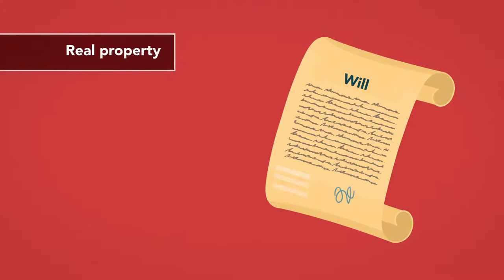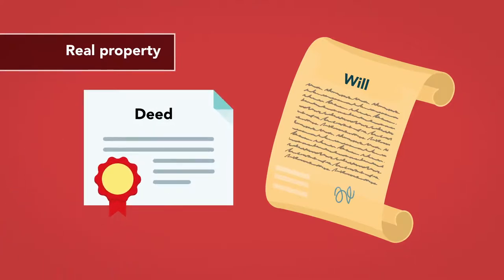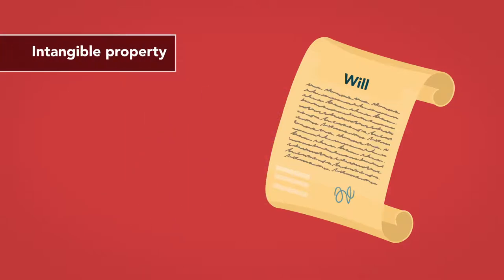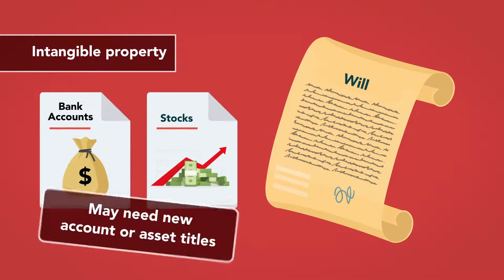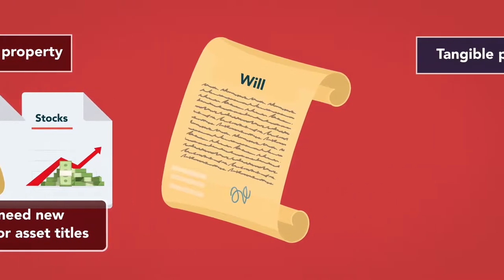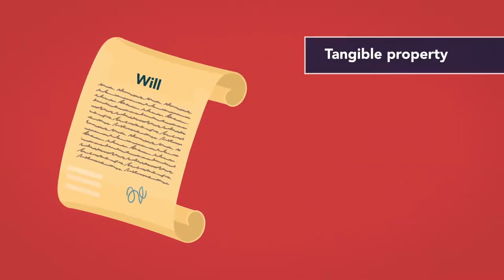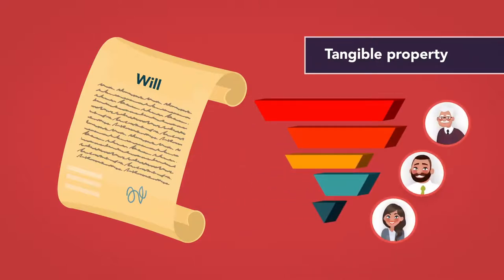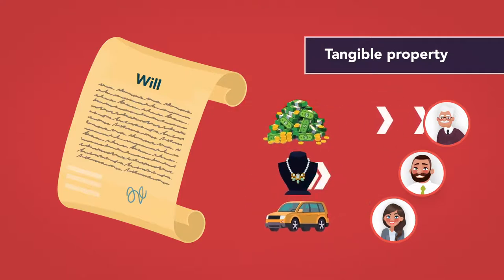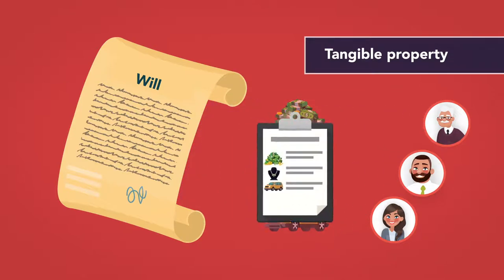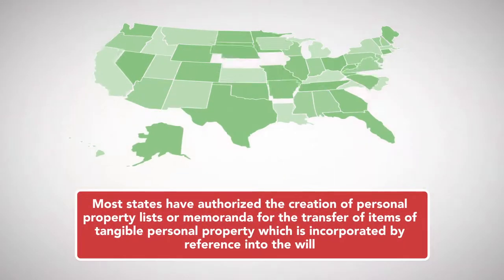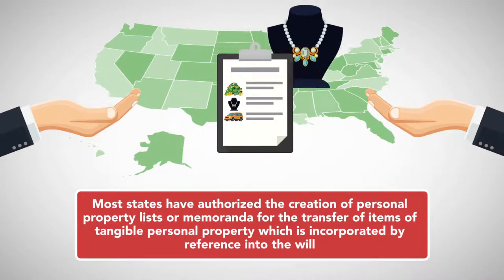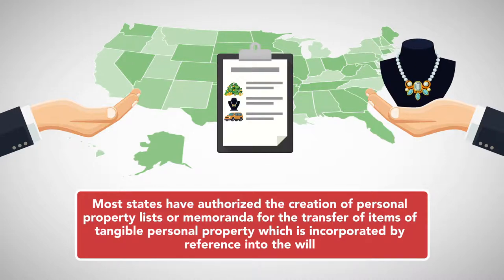Real property disposed of by will may also require a new deed or other documentation to clear the title after transfer. Intangible property transferred by will, such as stock or bank accounts, may need new account or asset titles as well. Tangible property may be disposed of by a general statement in the will, giving all or certain classes of property to a specific person or persons. It is also possible to dispose of individual items of tangible property through a list in the will. Most states have authorized the creation of personal property lists or memoranda for the transfer of items of tangible personal property, which is incorporated by reference into the will.